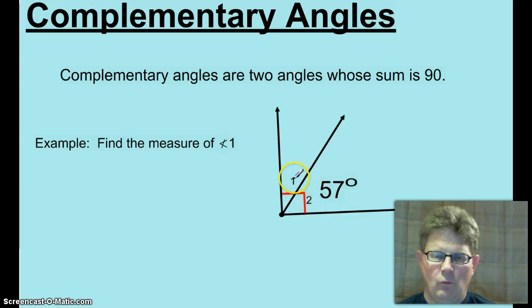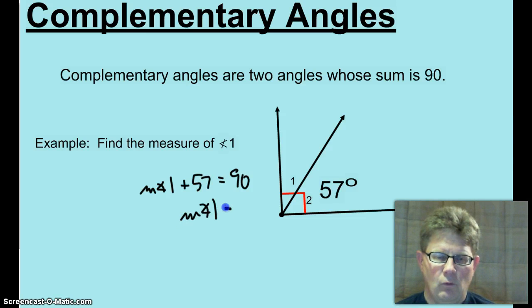So the sum of angle 1 plus 2 has to equal 90. So the measure of angle 1 plus 57 equals 90. Subtract 57 from both sides. The measure of angle 1, 33 degrees.